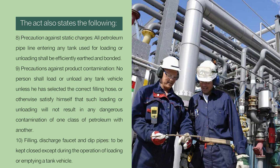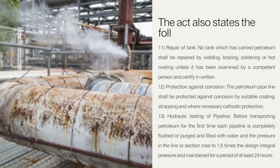The tenth point is regarding filling discharge faucets and dip pipes used in plant premises: they are to be kept closed except during the operation of loading or emptying a tank vehicle. The next provision is regarding repair of tanks: no tank which has carried petroleum shall be repaired by welding, brushing, soldering, or hot riveting unless it has been examined by a competent person and certified in writing, as failure to do so creates a chance of a huge accident. Next is protection against corrosion: petroleum pipelines shall be protected against corrosion by suitable coating, strapping, and where necessary, cathodic protection.